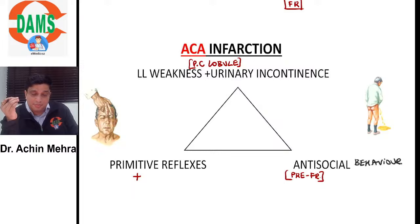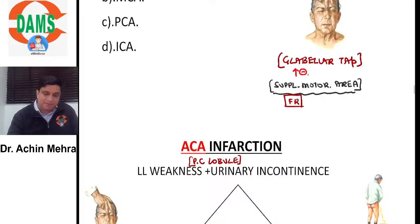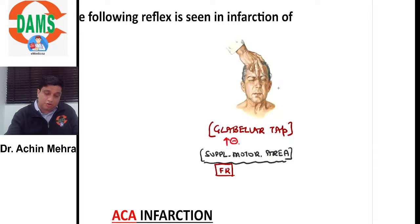The glabellar tap is also seen in Parkinson's disease, and when seen there it is referred to as the Myerson sign.